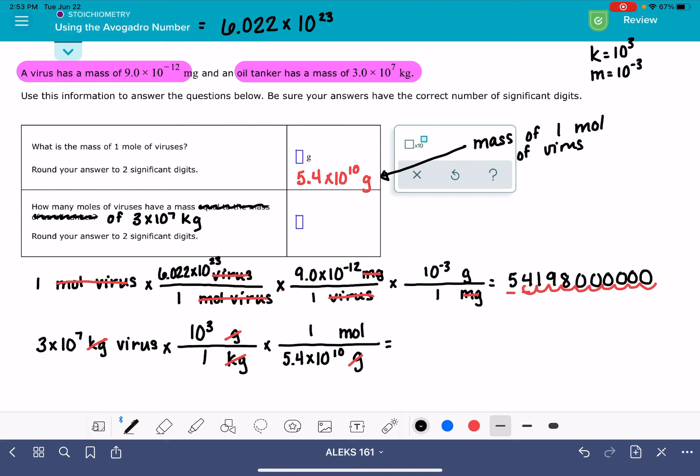3 times 10 to the 7 times 10 to the 3rd divided by 5.4 times 10 to the 10. This gives me 0.555, like a ton of fives on my calculator.